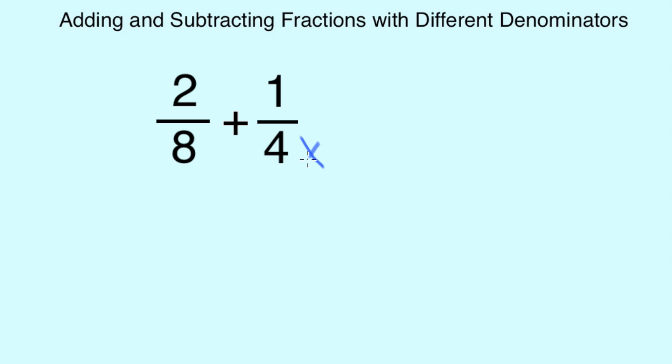I can do this by multiplying the 4 by 2, which gives me 8. But whatever I do to the bottom, I have to do to the numerator at the top. So I have to multiply that also by 2.